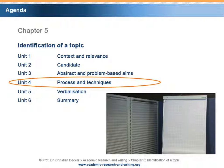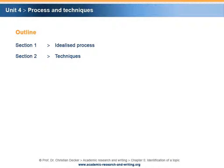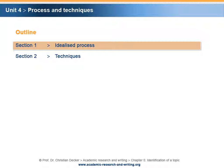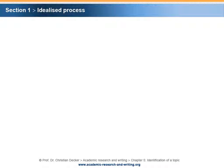In Unit 4, we will familiarize ourselves with the identification process and techniques. This unit is divided into two sections. Section 1 covers the Idealized Process. There are a number of techniques and tools that can be used in order to identify and refine a topic for a research project.